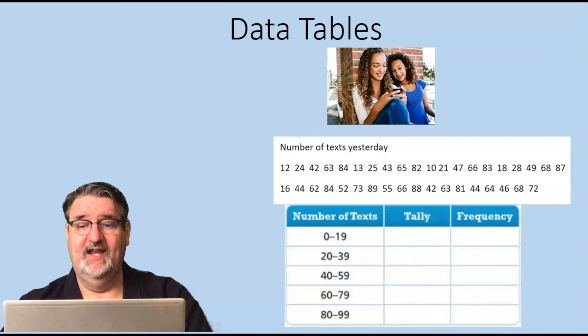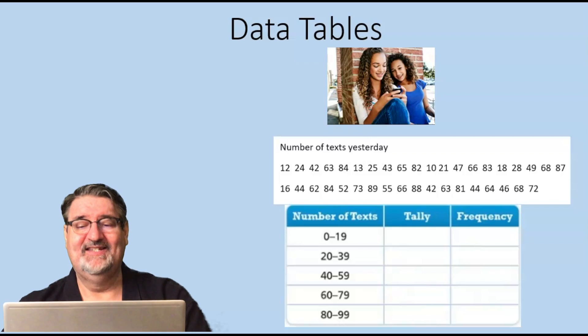So with our data table we put those into groups. The first group on the left side, the second group is 20 to 39, then we have 40 to 59, 60 to 79, and then 80 to 99 texts in one day.